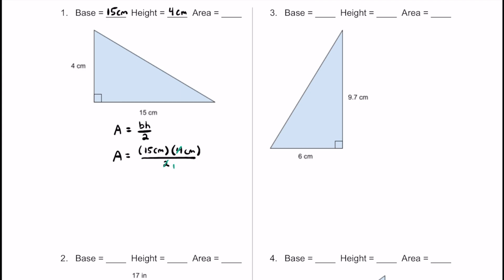The 4 and 2 can cross-cancel to make a 1 and a 2, so we don't have to divide later. Multiplying 15 times 2 gives us 30. We won't have a denominator, which is nice. And centimeters times centimeters gives us centimeters squared. So the area of this triangle is 30 square centimeters.